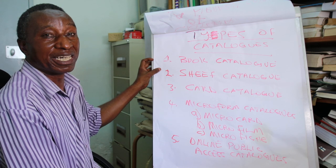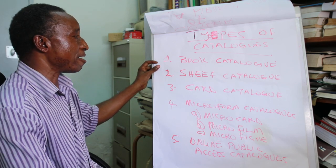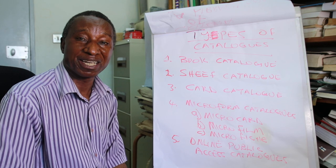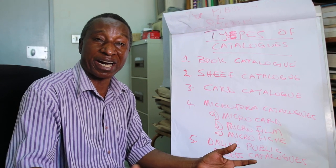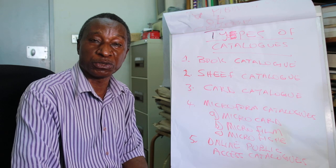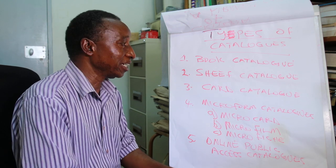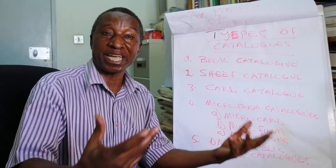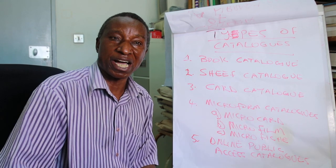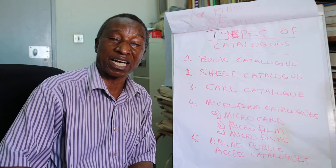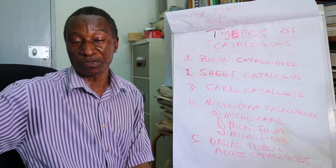A book catalog could be printed or handwritten. Book catalogs were cheap to create and portable — users could carry them around and consult them. But the challenge was that these book catalogs were not easy to update or to insert new materials. As a result, you had to produce supplements to the book catalogs, and as the collection grew bigger, you needed more and more volumes.